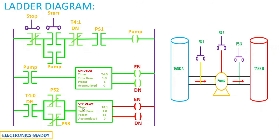According to the working of the off-delay timer, once it is energized, both the enable and done bits become high instantly. As a result, you can see the EN and DN bits indicated in green. What are we ensuring here? According to the question, PS1 should be on and then the start button should be pressed. After the pump starts, there is a 5-second delay, and only after that delay are PS2 and PS3 turned on and connected to the circuit. So we have achieved that requirement.